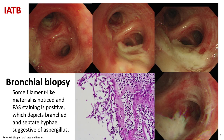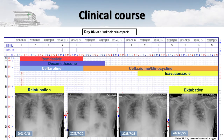We did bronchoscopy for the patient and found many whitish plaques over the trachea. The biopsy showed septate hyphae suggestive of Aspergillus. The patient was re-intubated due to respiratory distress. Because we started the antifungal agent early — before the results — the patient improved very rapidly and was extubated again after one week of antifungal treatment.